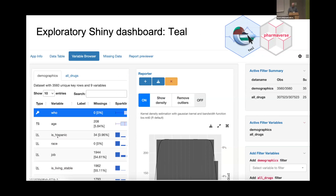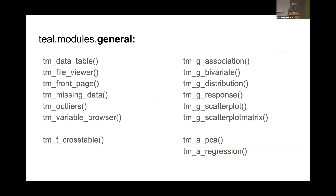These are the specific modules available. On the left side are the basic ones: missing data, outliers, variable browser, and cross tables. On the right side are some more statistical contexts: association, bivariate, distribution, response, scatter plots, PCA, and regression. These are all custom-made, carefully written by experts each in their domain for us to use.